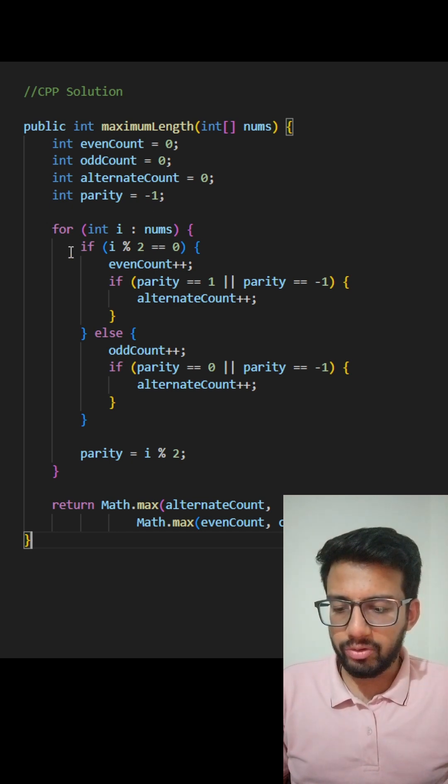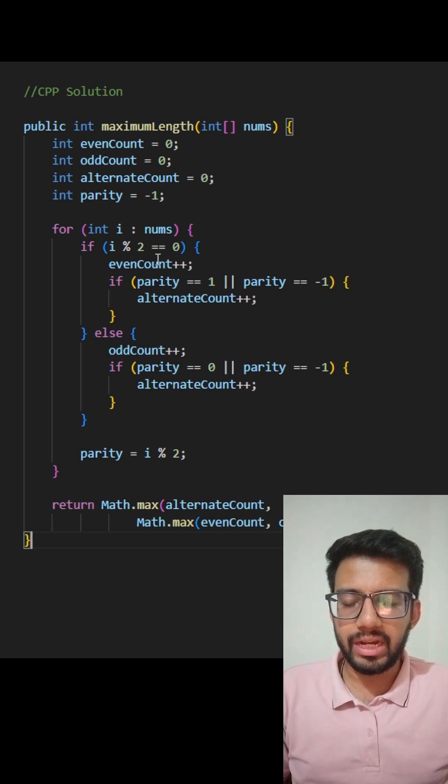Now, when I start iterating through this array nums, I check if my element is odd or even, and accordingly, I increase my even count or the odd count, and then I check if the parity of the previous element was different.